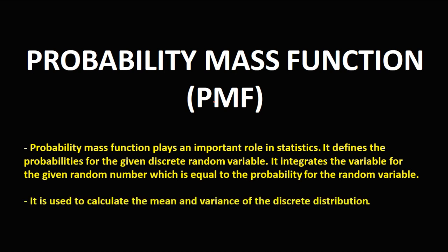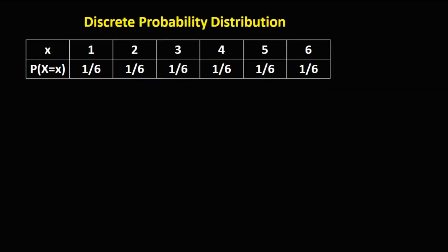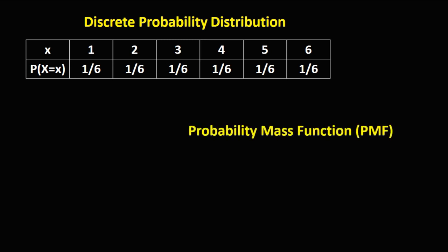It is also used to calculate the mean and variance of the discrete distribution. So we have this given discrete distribution, and we're going to convert this one into a probability mass function.